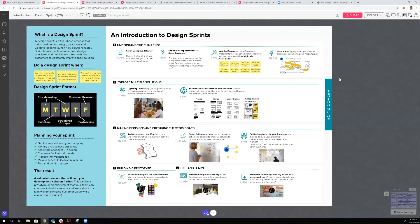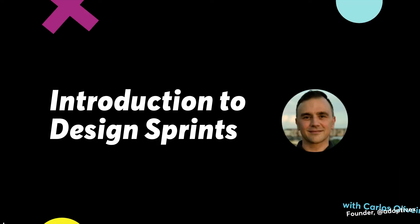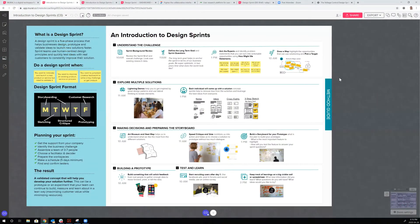A design sprint is a five-phased process using design thinking to uncover insights, generate ideas, test solutions, and get feedback from real people. It takes the best of agile teams, design thinking, and lean startup and mixes them into a recipe that you can run within five days.